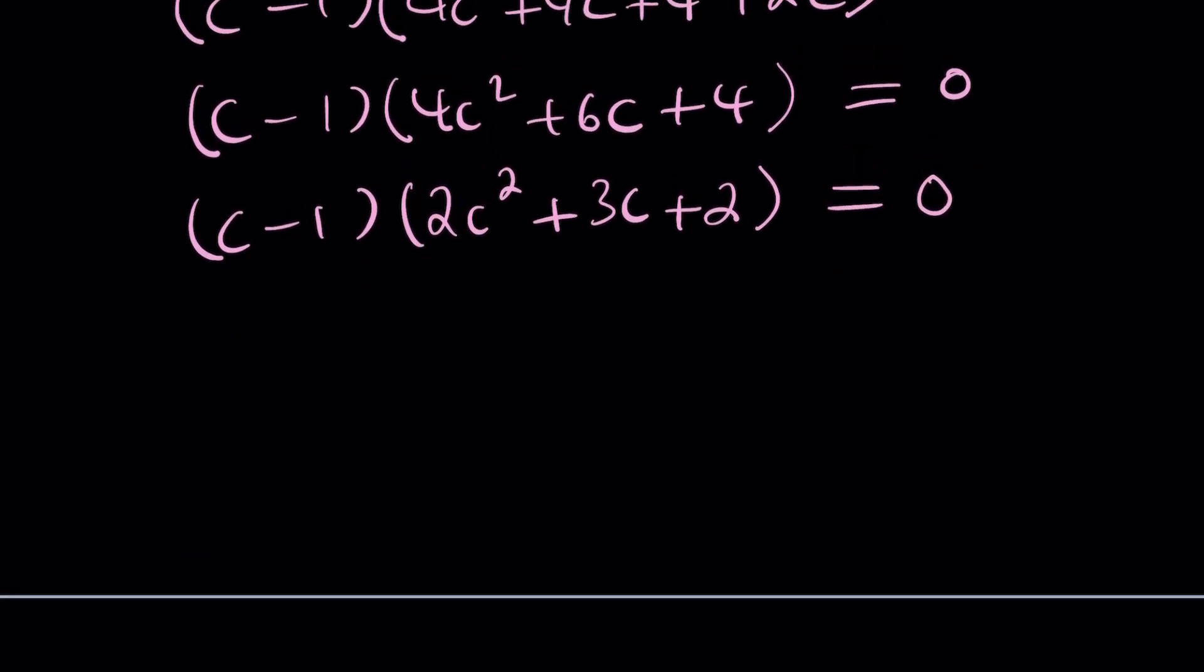Now we get two factors. One of them is a quadratic. Let's start with the linear one, which is easy to solve. c minus 1 equals 0 gives us c equals 1. But what is c? c is cosine x. So cosine x equals 1 is going to be our first solution, and we're going to talk about this in detail. And the other solutions are going to be coming from the quadratic.